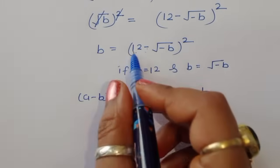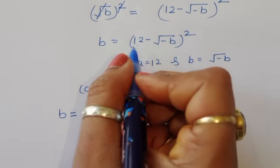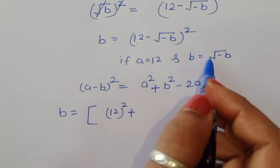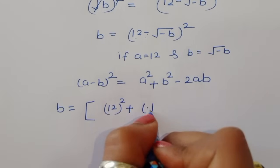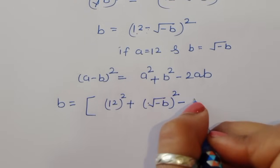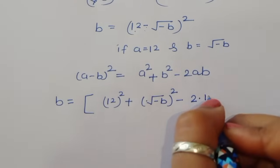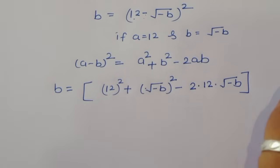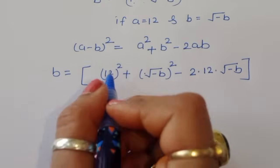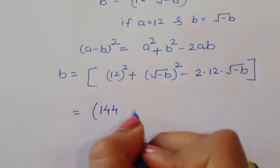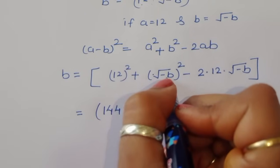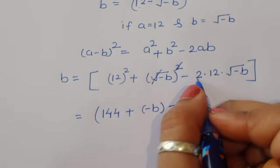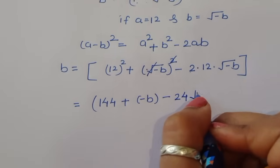The formula is: (a minus b)² = a² + b² minus 2ab. Using this formula here, we get b is equal to 12² plus (square root of minus b)² minus 2 times 12 times square root of minus b. So that is 144 plus (square root of minus b)², and the square cancels with the square root giving minus b, minus 24 square root of minus b.